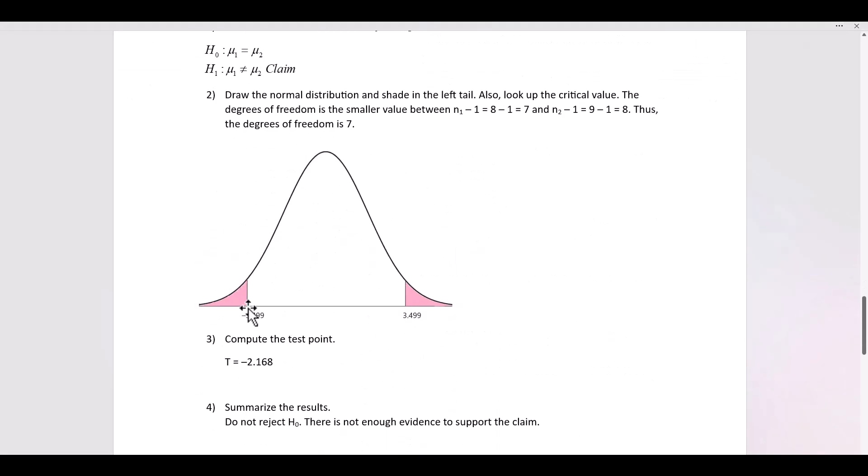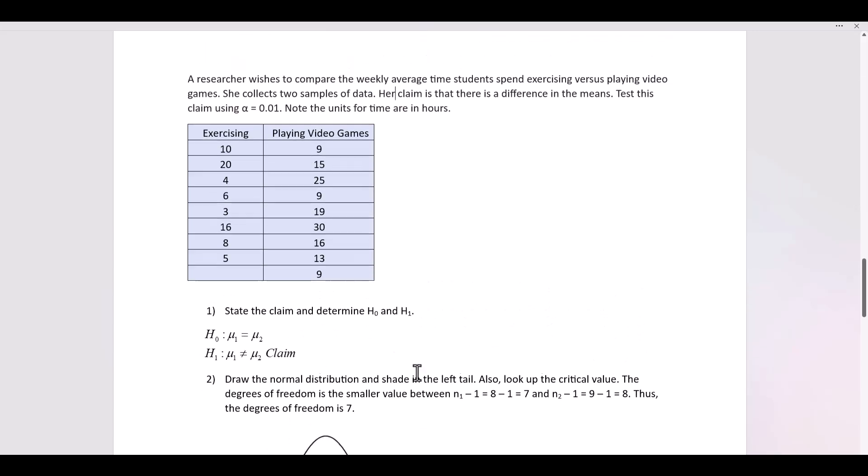Alpha is 0.01 and we go down to level 7, 3.499. Thus, we have our two critical values. One is negative, negative 3.499. The other is positive, positive 3.499.